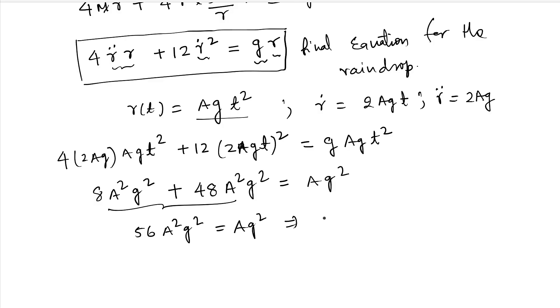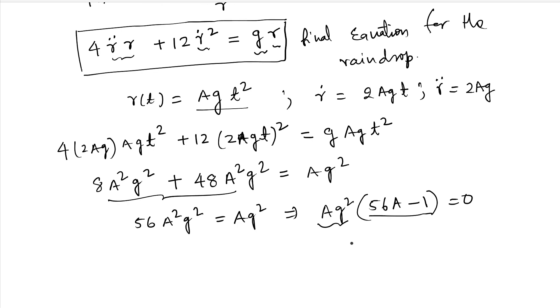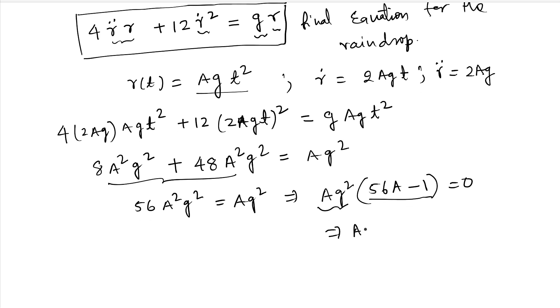So this is nothing but 56 a square g square equal to a g square. That is, if I take a g square as common, so 56 a minus 1 equal to 0. None of these are 0. So this must be 0, which means a is 1 by 56.